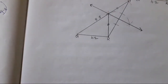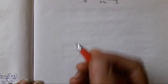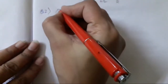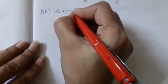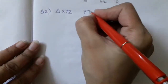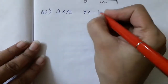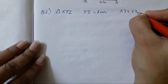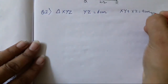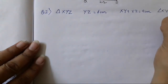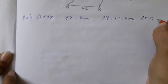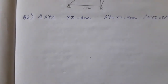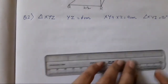Now let's construct the second one. For the second figure, the measurements given are: construct triangle XYZ in which YZ is 6 centimeter, XY plus XZ is equal to 9 centimeter, and angle XYZ is equal to 50 degrees. It's almost the same as what we did for the first one. Let's draw the rough diagram according to the measurements.